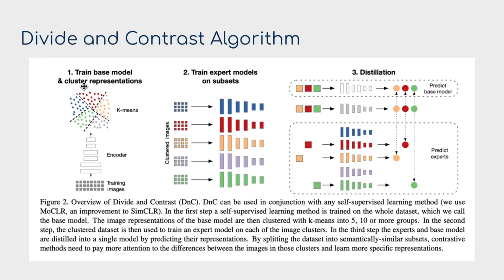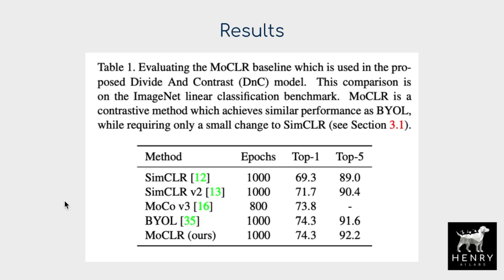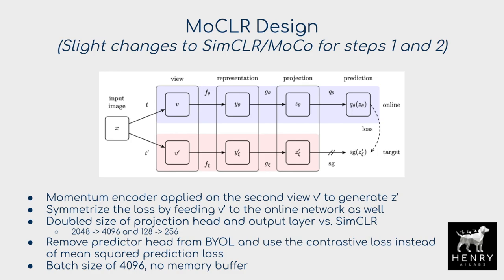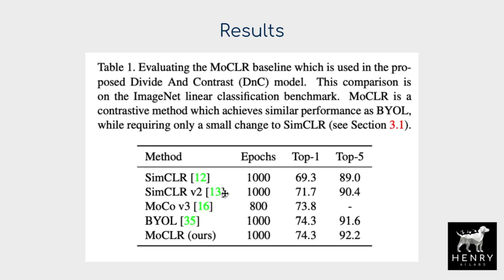After clustering the representations, the same MoClear algorithm is applied on each subset to train the expert models in stage two. A results table compares MoClear against Bootstrap Your Own Latent, MoCo v3, SimCLR v2, and SimCLR, showing improvements from the design choices—batch size of 4096, removing the predictor head, using contrastive loss, doubling projection size, and symmetry in the loss—on ImageNet top-1 and top-5 accuracy. This demonstrates MoClear's contribution independent of the full Divide and Contrast framework.